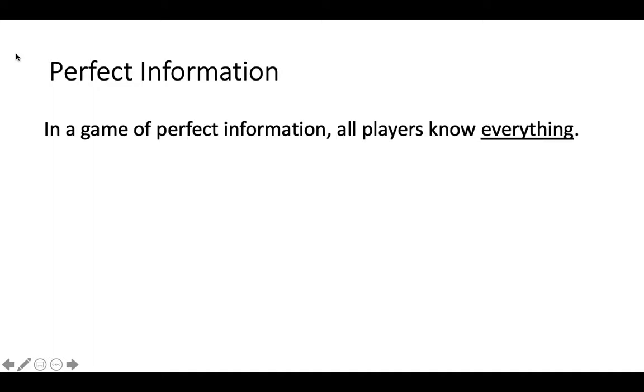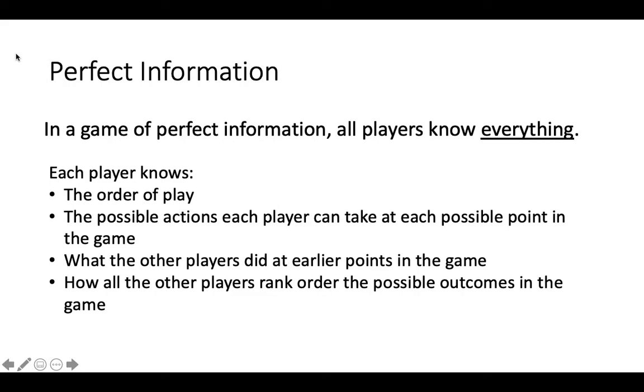We are going to start by modeling games of perfect information because they are the simplest types of games to model. In a game of perfect information, all players know everything that there is to know about the game. In particular, every player knows the order of play, what each player can possibly do at each point in the game, what the other players did at earlier points in the game, and all other players' preferences about each possible outcome of the game.